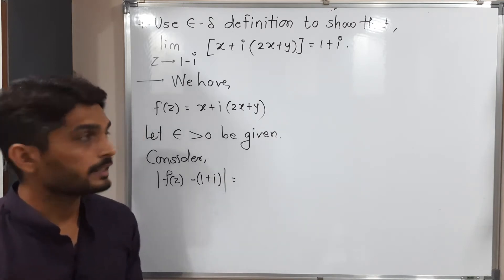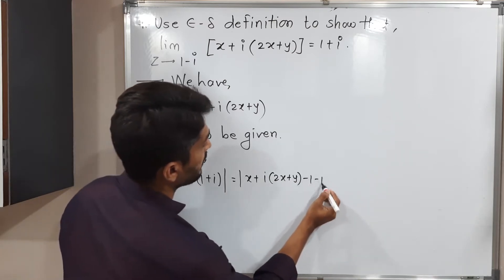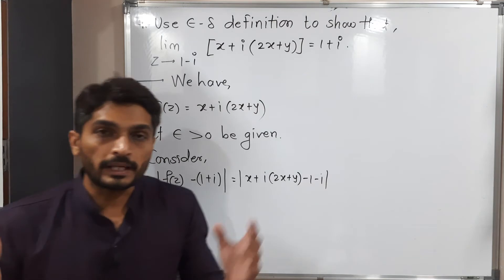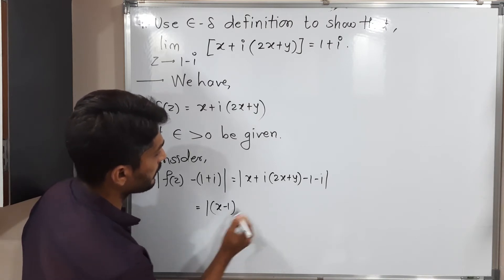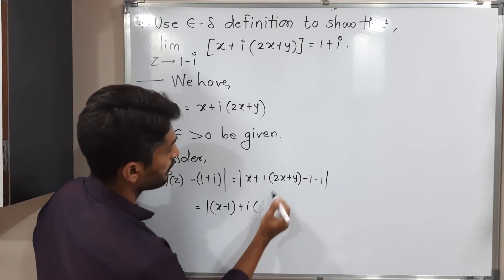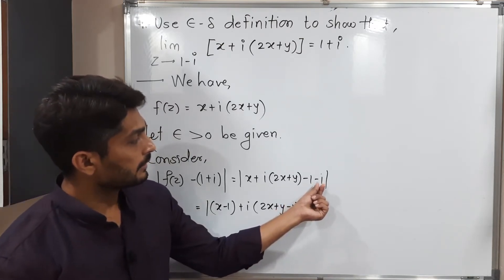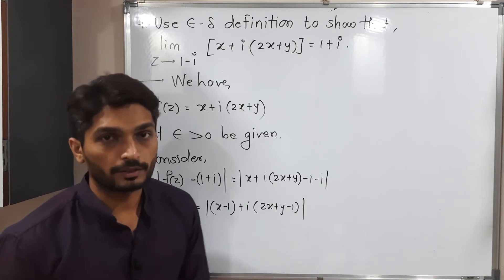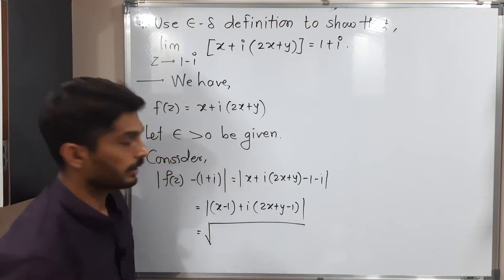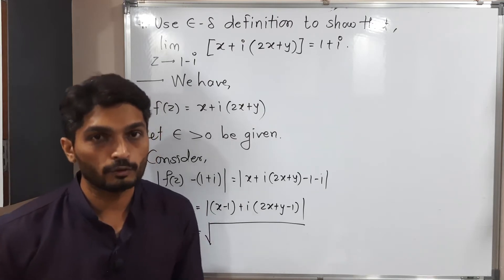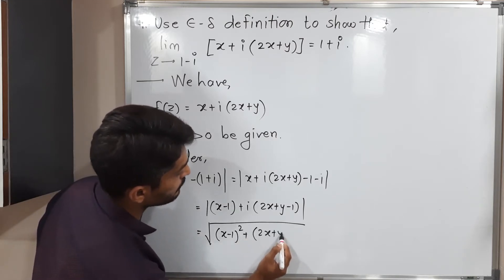So let us put the value of f of z here. Our function is x plus i times x plus y, minus 1 minus i. After that, we can collect the real part and imaginary part. So this is equal to mod of x minus 1 plus i times 2x plus y minus 1. Then applying the definition of mod in complex numbers: square root of x minus 1 squared plus 2x plus y minus 1 squared.